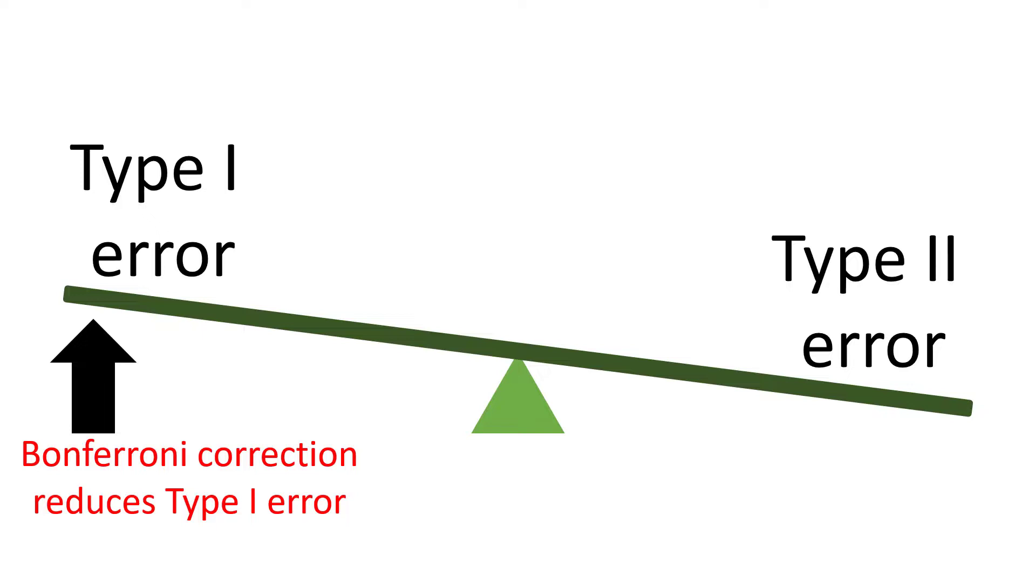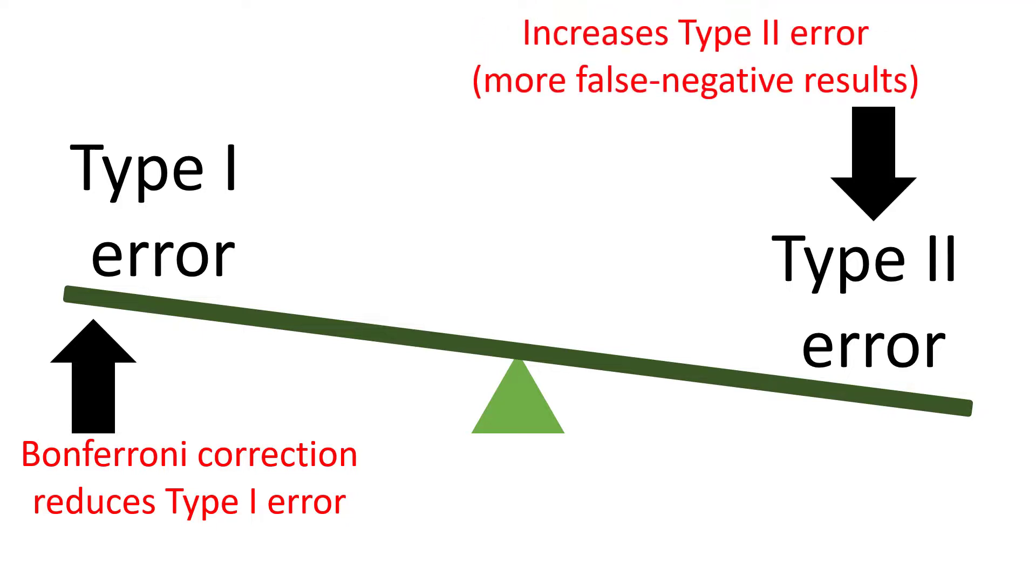However, this comes at a cost, since it quickly increases the type 2 error, or chances of finding a false negative result. This means the Bonferroni correction can seriously reduce the statistical power of your test, making it harder to find a true effect.